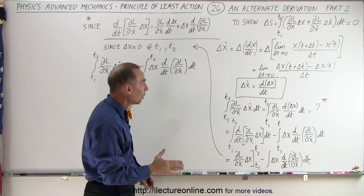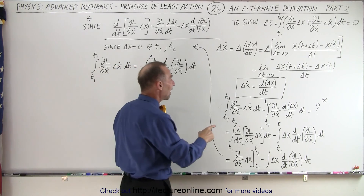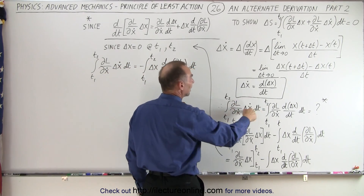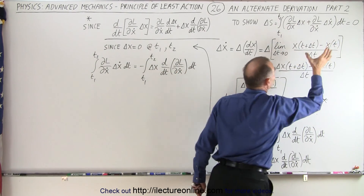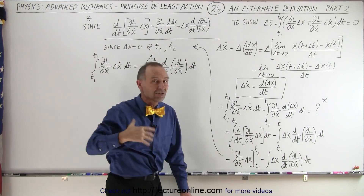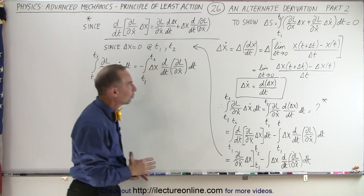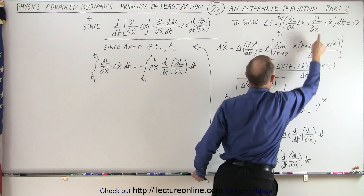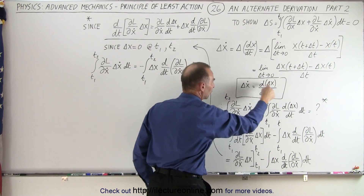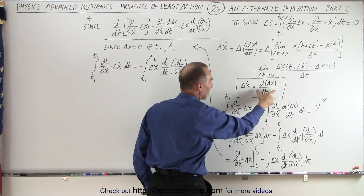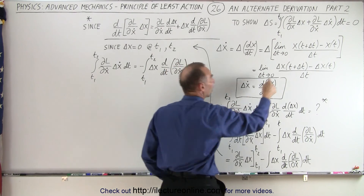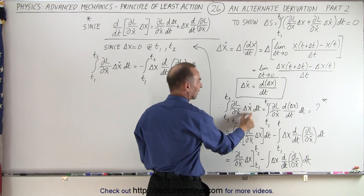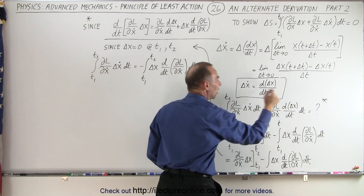Now that we have that relationship, we can go back and look at this equation. Notice that the second part of the integral needs to be written in a different form. If we take that second part and write it separately, we have a δẋ term, and we now have a different expression for that — we can replace δẋ by d/dt of δx.